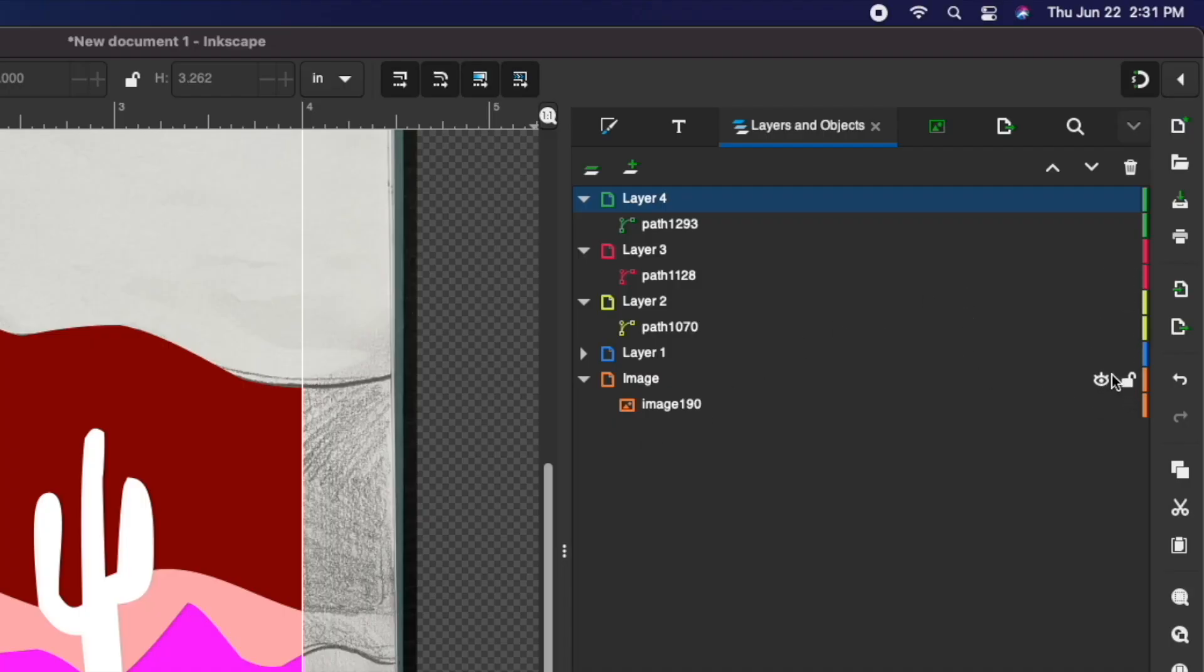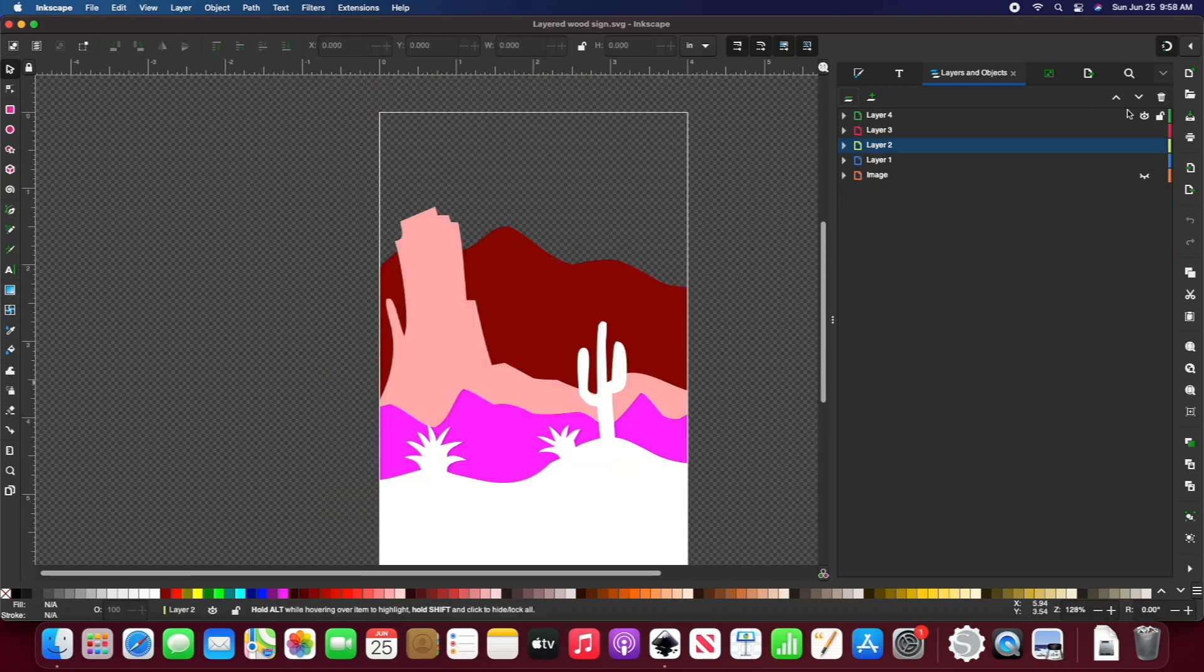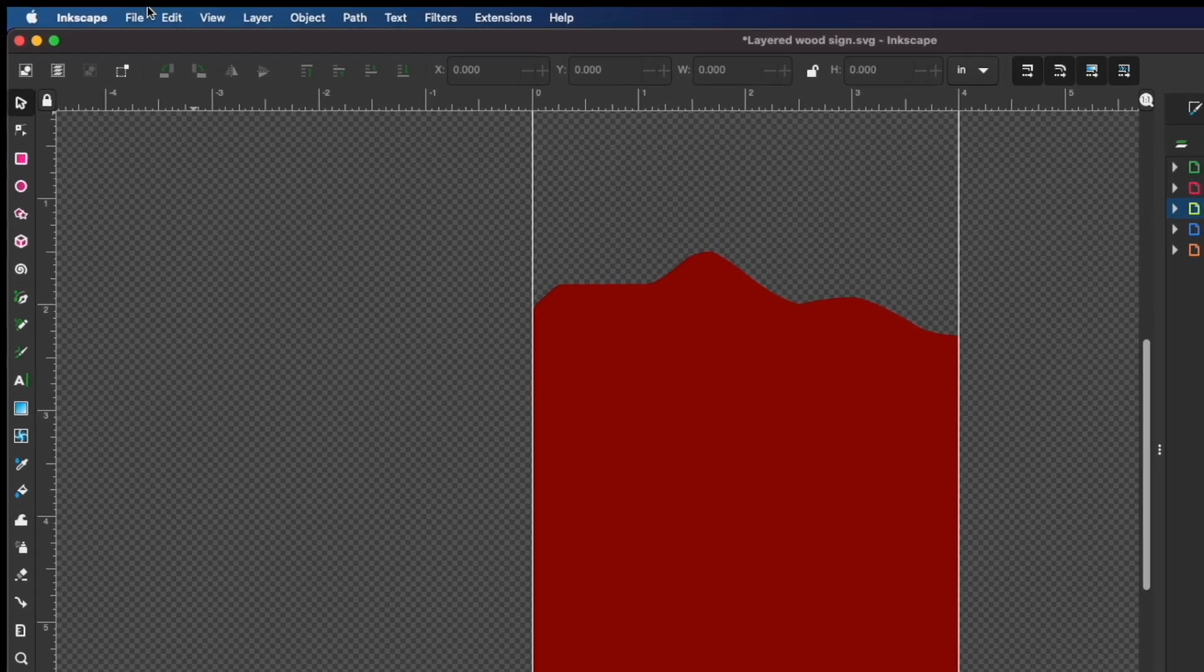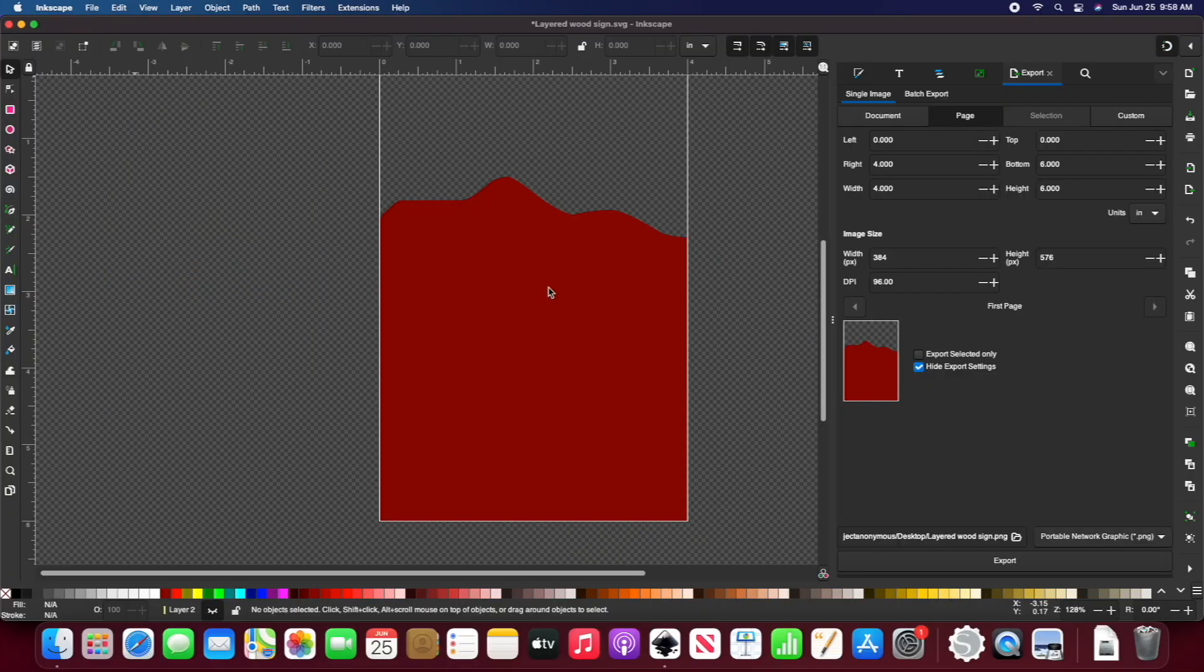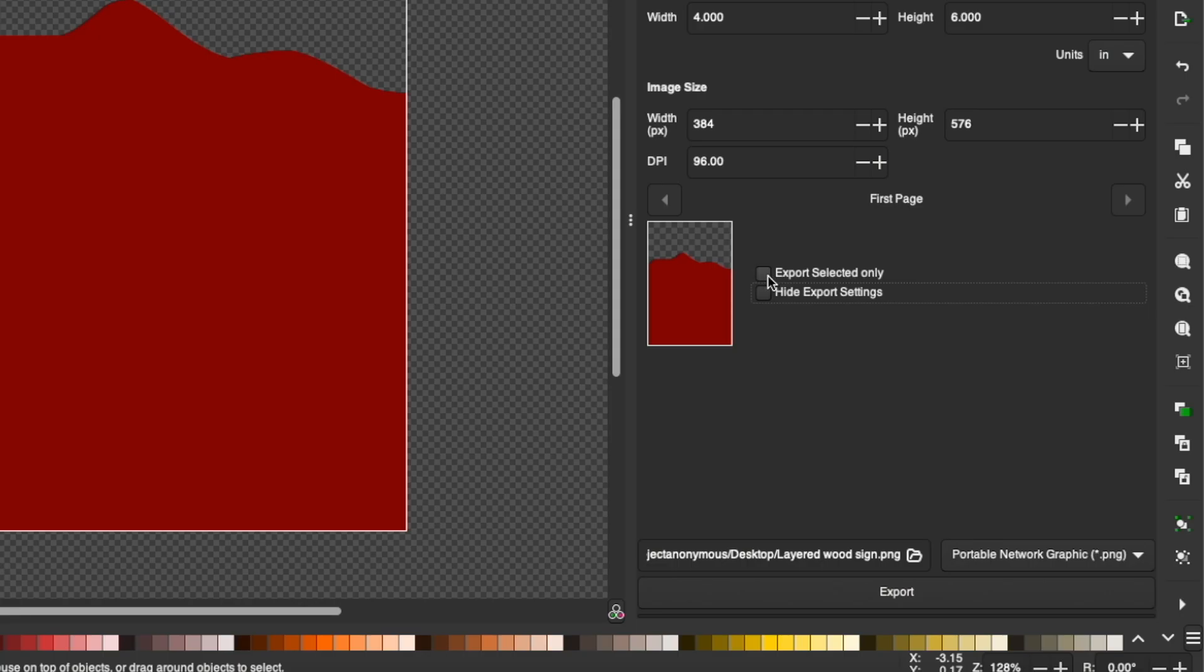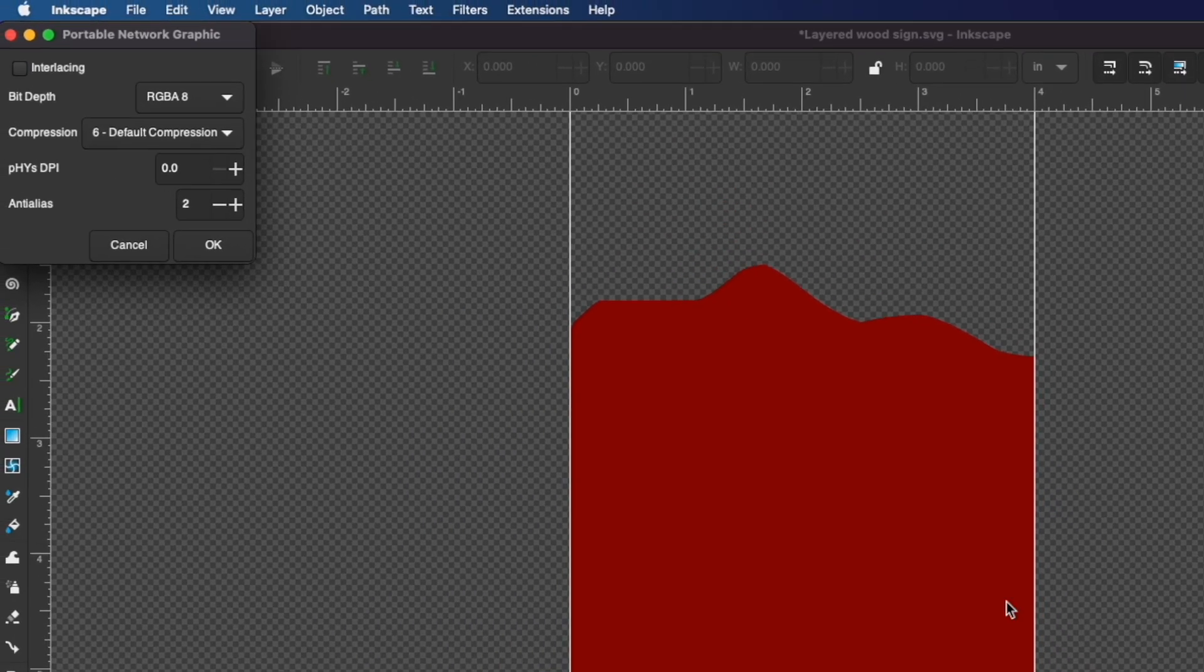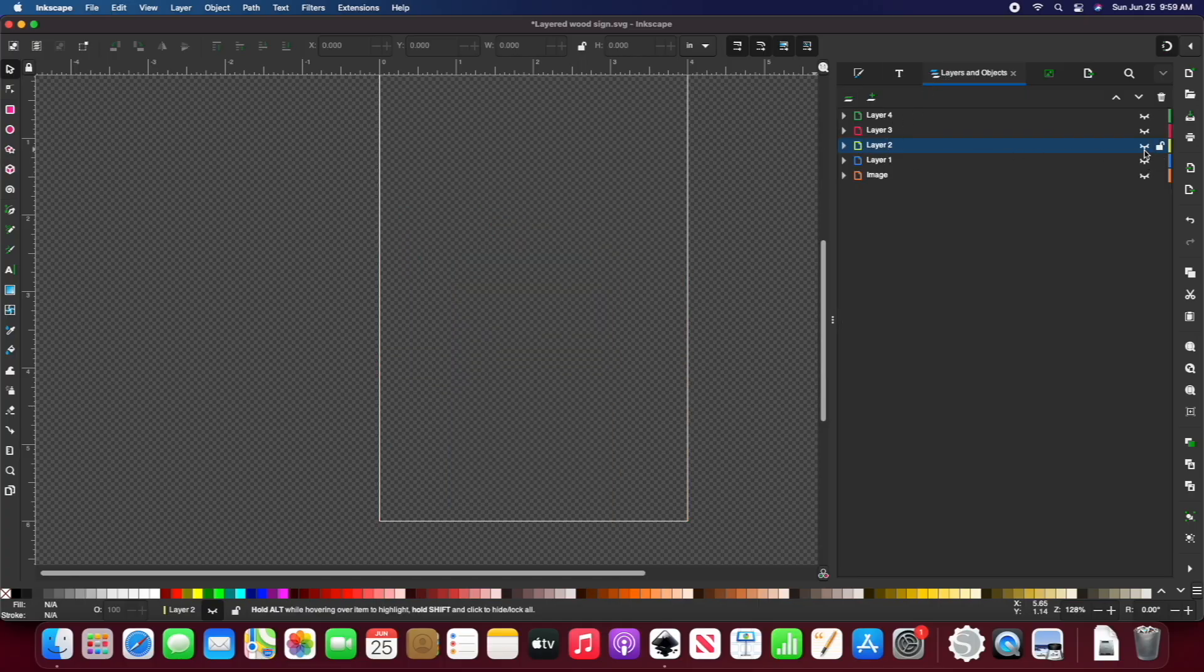I'll hide my image layer and these are the finished results. Now we need to export our design, so we'll hide all the layers except one and export each individually. We'll go to File, Export. We'll click on Export Selected Only and we can save it as a PNG. And now we can save the rest of the layers.